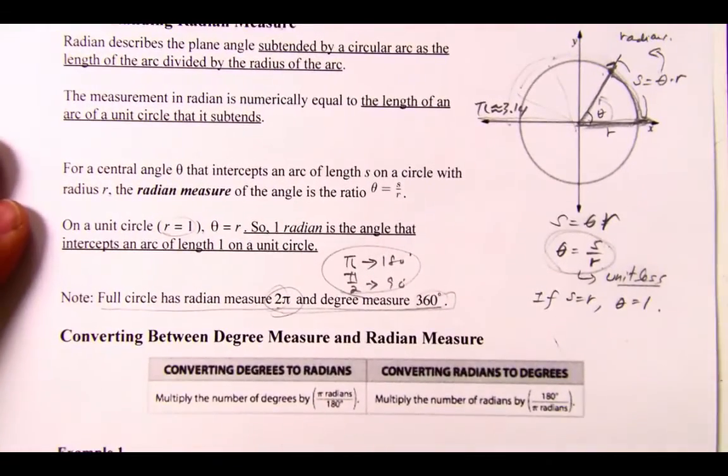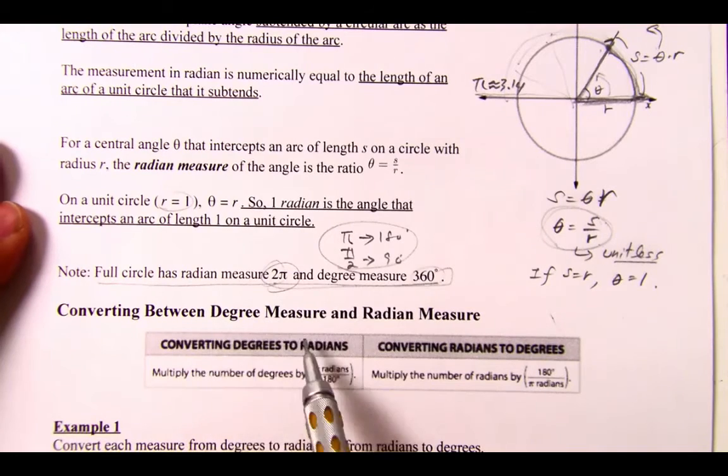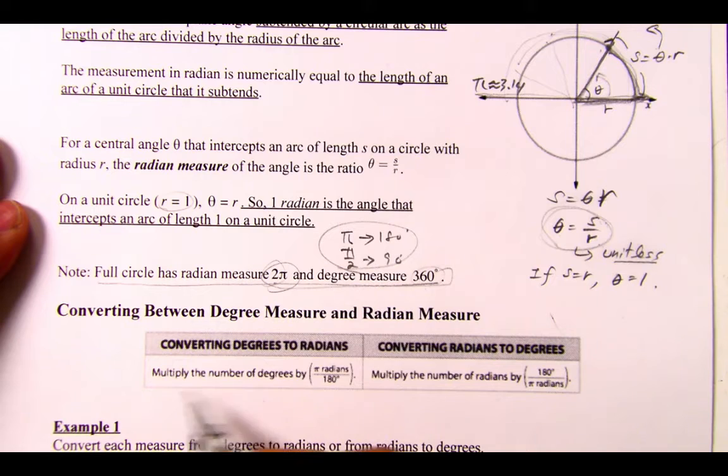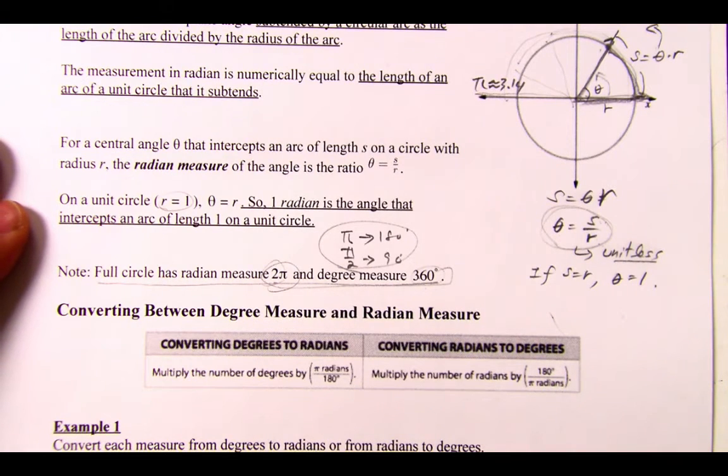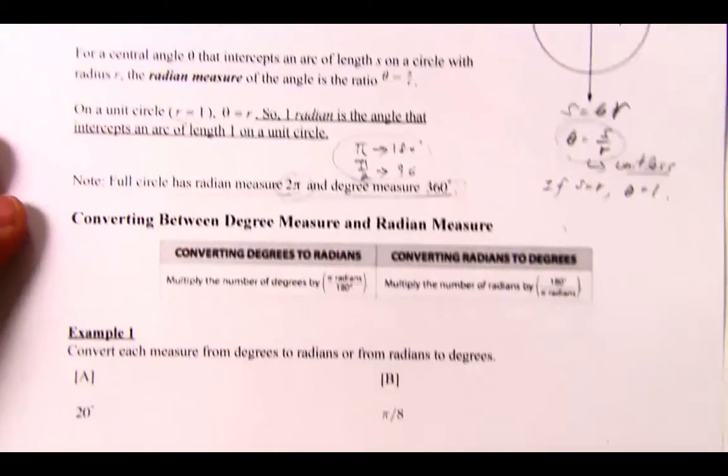So here is conversion between the degree measure and the radian measure. Multiply the number of degrees by this relationship, and multiply the number of radians by this relationship. And I'm going to go through each one a little bit.